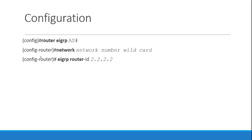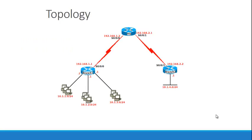It will find a router ID if you don't configure one, but you can configure it. Here's our topology: I've got four loopbacks configured — loopback 0 has 10.1.1.1, loopback 1 has 10.1.2.1, loopback 2 has 10.1.3.1. There are serial links between Branch 1 and HQ in the 192.168.1.0 network, and between HQ and Branch 2 in the 192.168.2.0 network. There's also another loopback off Branch 2 in the 10.1.4.0 network.